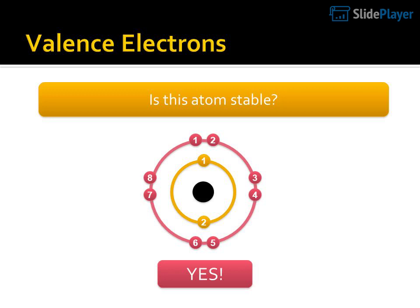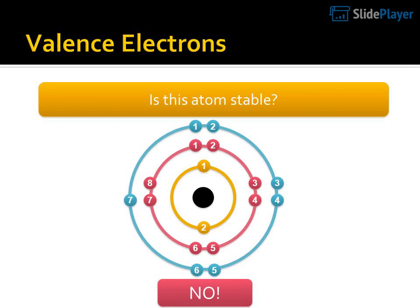Valence electrons. Is this atom stable? Electron configuration: 1, 2, 1, 8, 3, 7, 4, 2, 6, 5 — Yes. Valence electrons. No.